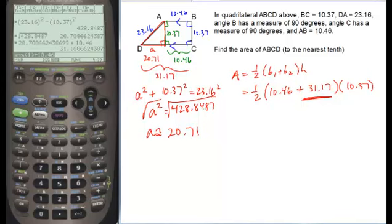And so if we plug this now into our whole equation, we get 0.5 times the quantity, 10.46, plus this measurement that we just calculated.